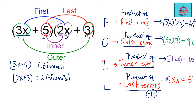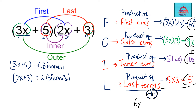Now you finally add all the terms: 6x² plus 9x plus 10x plus 15. The 9x and 10x are like terms, so they add to give 19x. The final answer from the FOIL method is 6x² plus 19x plus 15. This is the multiplication of these binomials using FOIL method.